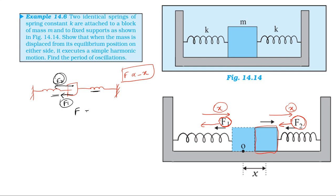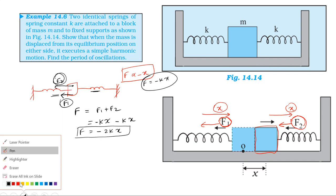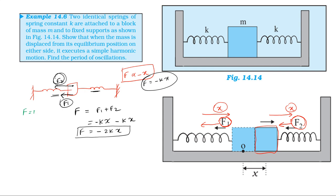So the net force on this block equals F1 plus F2. F1 equals minus kx, and F2 equals minus kx. Therefore the total acceleration a equals minus 2k divided by m, into x.